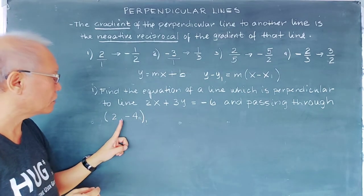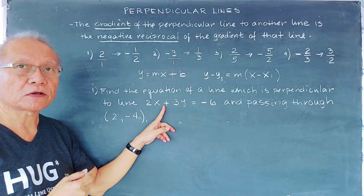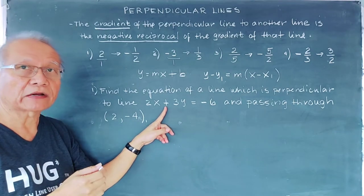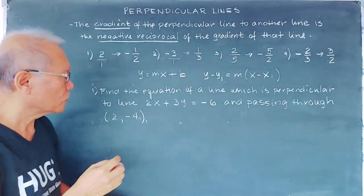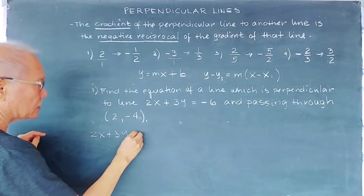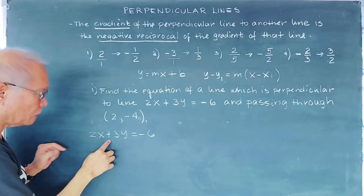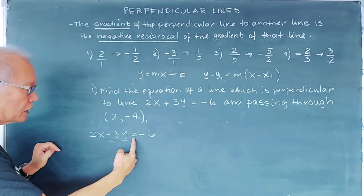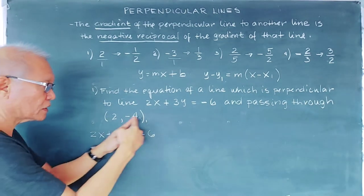We have the coordinates of the second line: (2, −4). First, we determine the slope of the given line 2x plus 3y equals negative 6. We do this by transforming the equation into the form y equals mx plus b. So we have 2x plus 3y equals negative 6. Since y is positive, we leave the 3y on the left and transpose 2x to the right. This positive 2x becomes negative on the other side.